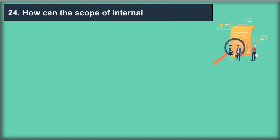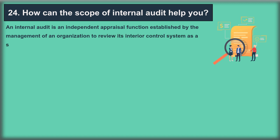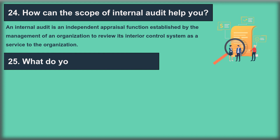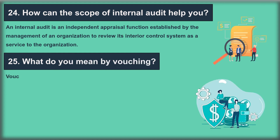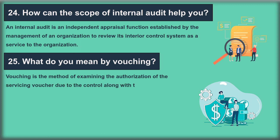Question 24: How can the scope of internal audit help you? An internal audit is an independent appraisal function established by the management of an organization to review its internal control system as a service to the organization. Question 25: What do you mean by vouching? Vouching is the method of examining the authorization of a servicing voucher by the control along with the corresponding supporting document.